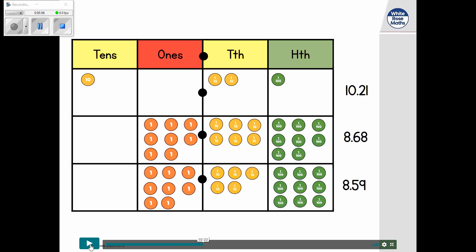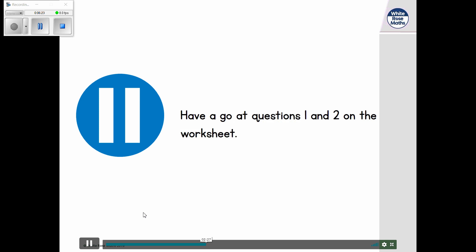So we've got 6 tenths in 8.68 over here. And we've only got 5 over here. So it doesn't matter how many hundredths they've got because they are a smaller value. What we need to look at, these are the same, so we need to go into the next column on the right and have a look at the value of those digits in the tenths column. Pause the video here and have a go at questions 1 and 2.